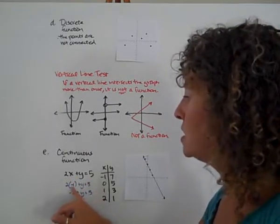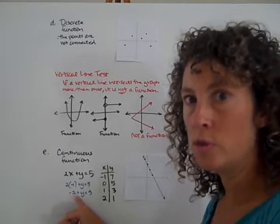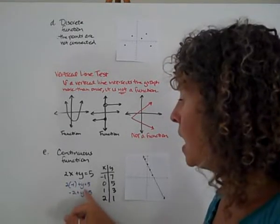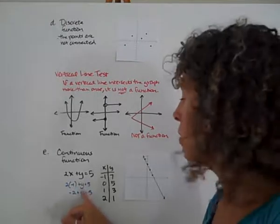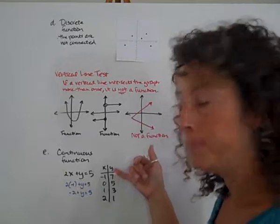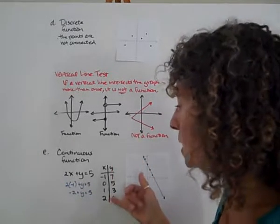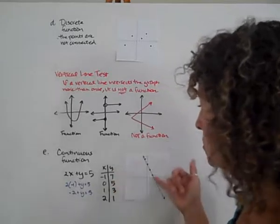I'm going to see what happens when I plug it into my equation. Here I took my equation. I substituted negative 1 in for x. 2 times negative 1 is negative 2. So I have negative 2 plus y equals 5. I know that in order to make this equation true, y has to be 7. Negative 2 plus 7 gives me 5. So that gave me my first ordered pair. I created the rest of the ordered pairs once I figured out what that looked like. Then I graphed those ordered pairs.